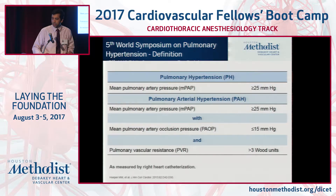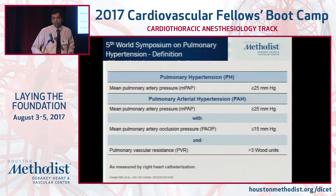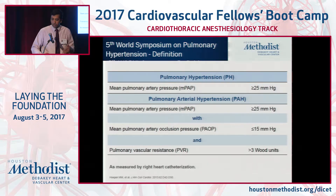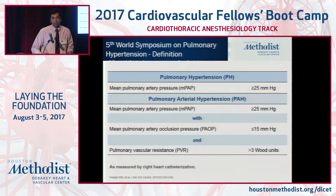I'll quickly run through the definition of pulmonary hypertension. It's defined as mean pulmonary artery pressure over 25, and pulmonary arterial hypertension used to be defined as precapillary pulmonary hypertension, which is mean pulmonary artery pressure over 25 with a wedge pressure under 15 and a PVR over three wood units. This diagnosis has to be made by a right heart catheterization — you cannot make the diagnosis of pulmonary arterial hypertension just based on echocardiogram.